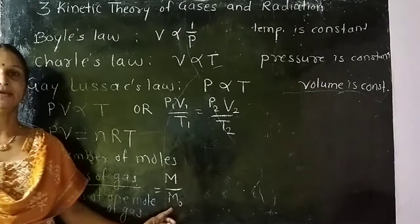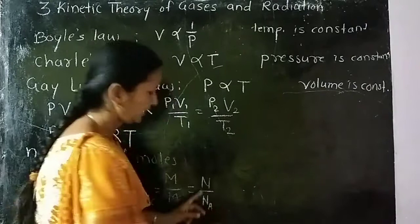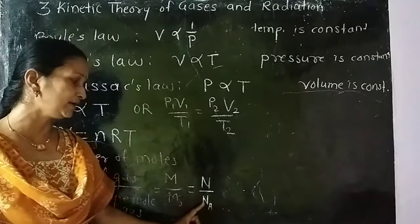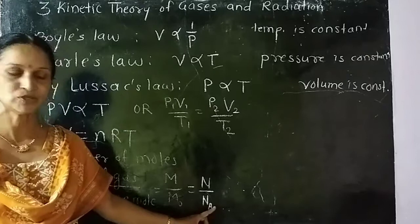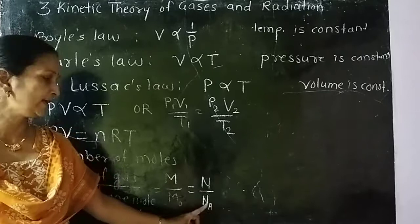It is also defined as N by NA. N divided by NA. So N is nothing but number of molecules of gas divided by number of molecules per mole of gas. It is also known as Avogadro's number. This is N, number of moles.